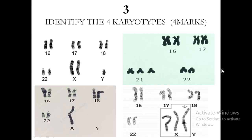There are four karyotypes here to identify. The first karyotype — looking at the 23rd chromosome, you have X and Y present, specifically two X's and one Y: XXY. That is Klinefelter syndrome. Then you have three chromosomes at the 21st, so this is trisomy 21, which is Down syndrome.